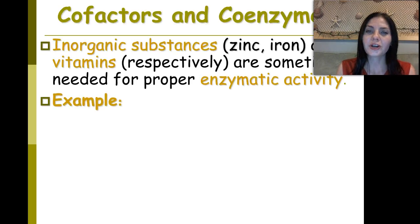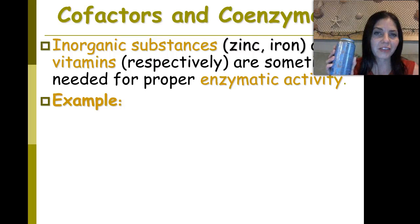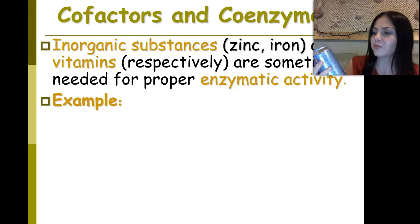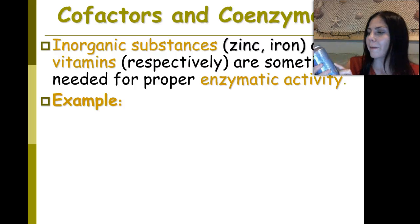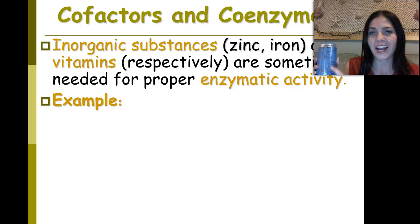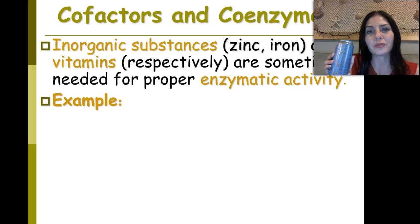What else affects enzymes? Cofactors and coenzymes. Inorganic substances such as zinc, iron, and vitamins are sometimes needed for proper enzymatic activity, meaning they help enzymes out. Reading the label of my energy drink, I see vitamin B6 and vitamin B12, so those might help enzymes catalyze reactions. But as far as ingredients go, it has 0 calories, 0 grams of sugar, 0 carbohydrates, 0 grams of protein, and 0 grams of fat — so technically this doesn't have any energy I can readily use in my body. For example, iron must be present in the structure of hemoglobin in order for it to pick up oxygen. Hemoglobin is the protein found in red blood cells.